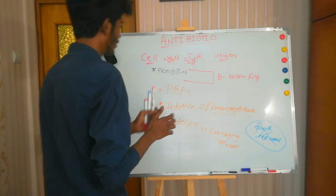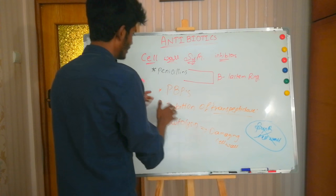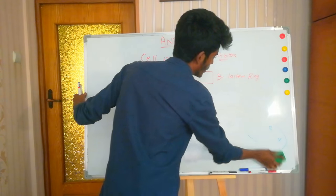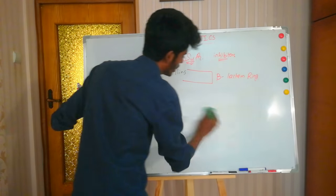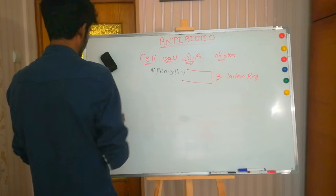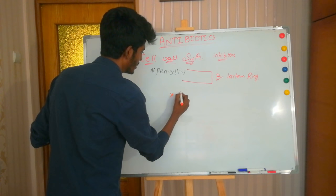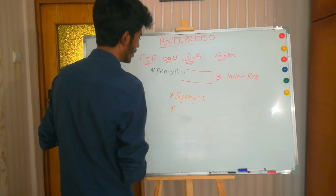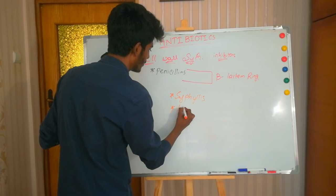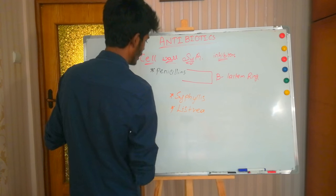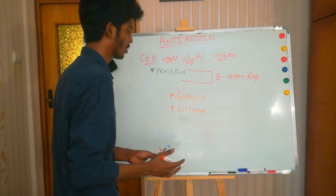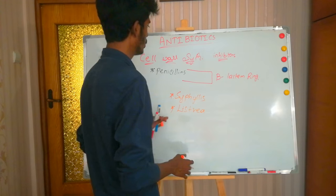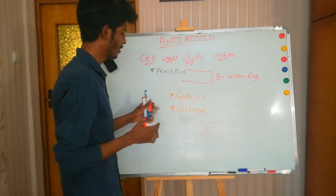Now we know the natural penicillins and the generalized mechanism of action of penicillins. The uses of natural penicillins include gram-positive infections, with a specific notable use in the treatment of syphilis. They are also used against streptococcal and staphylococcal infections, which are gram-positive.